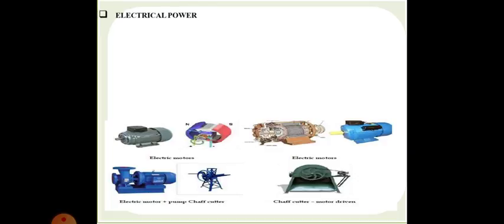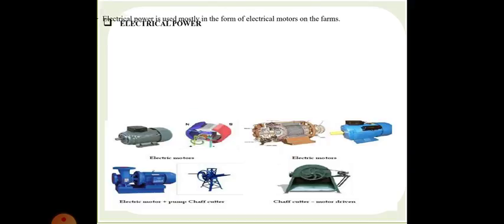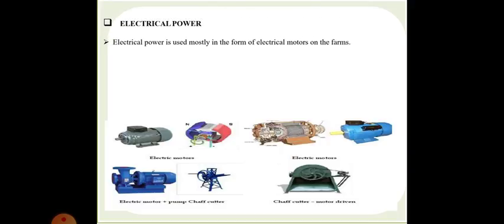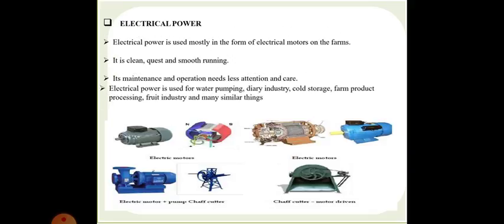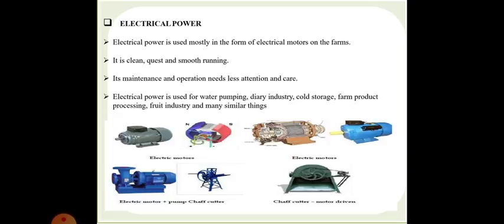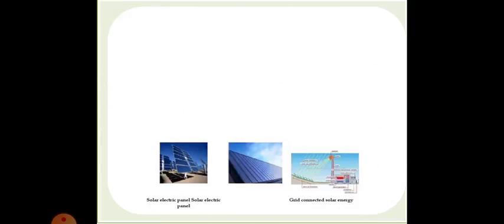Now we will be talking about electrical power. You can observe here electrical motors of different types, chaff cutters which are motor driven, electrical motor driven pump with chaff cutters. Electrical power is used mostly in the form of electrical motors in the farms. It is clean, quiet and smooth running. Its maintenance and operation needs less attention and care. Electrical power is used for water pumping, dairy industries, cold storage, farm products processing, fruit industries and many other similar things.